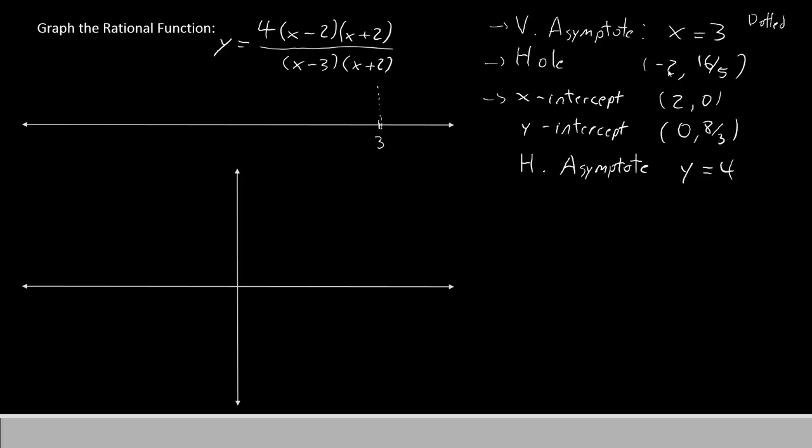Let's also put my hole on there. I've got negative 2 comma 16 over 5. I'm more interested in the x value right now, so we'll go over here to negative 2, somewhere over this way. Looks good. And this is going to be an open circle because, of course, it's not really part of the domain.